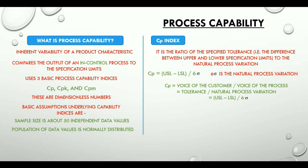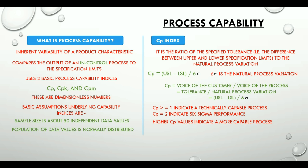CP value of greater than or equal to 1 indicate a technically capable process. And a CP value of 2 indicate a 6 sigma performance. So we can conclude that higher CP values indicate a more capable process. It is important to note here that CP index does not address the centering of a process relative to the specification limits.